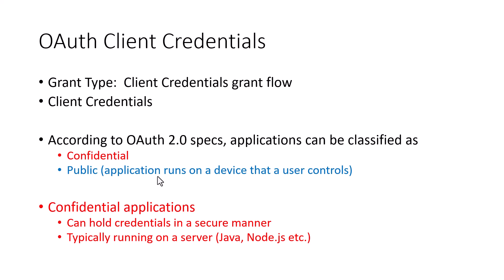You can look into the binary files. Any application that runs on a device that a user controls — the user can eventually hack into it, maybe even look into the network traffic and be able to see anything stored secretly. So when we talk about client credentials grant flow, we are only talking about confidential clients. This is where the user does not have control over the device it runs on. Typically, confidential applications run on a server that the end user has no control of, and they can hold on to credentials in a secure manner — that's the key thing.